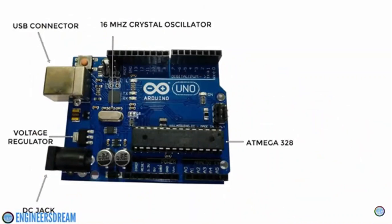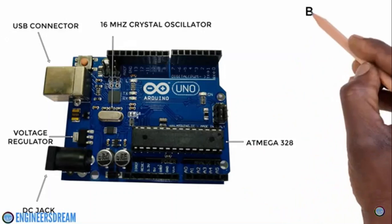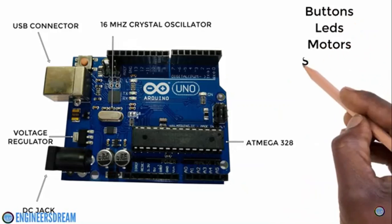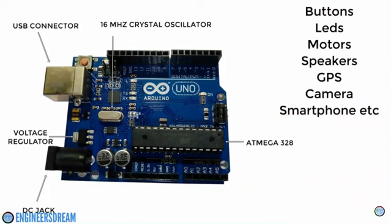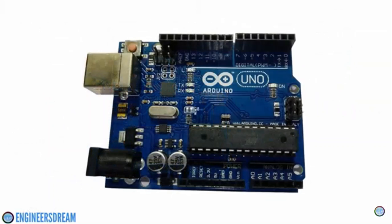The Arduino board generally consists of a USB connector, a DC jack, Atmega microcontroller, crystal oscillator, voltage regulators, reset switch, etc. It can interact with components like buttons, LEDs, speakers, GPS units, cameras, internet, and even your smartphones.